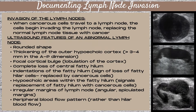When you visualize an abnormal mass in the breast, the next thing you're going to look at is the axillary lymph nodes. When cancerous cells travel to a lymph node, they begin invading it, replacing the normal lymph node tissue with cancer. This is why you'll hear radiologists describe it as a replaced lymph node.